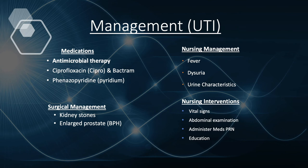When choosing an antibiotic, a culture and sensitivity test must be done. The urine culture identifies the bacteria type, while the sensitivity portion tells us which antibiotic should be used. Management starts with antimicrobial therapy to eliminate microorganisms such as bacteria. Ciprofloxacin and Bactrim are examples.